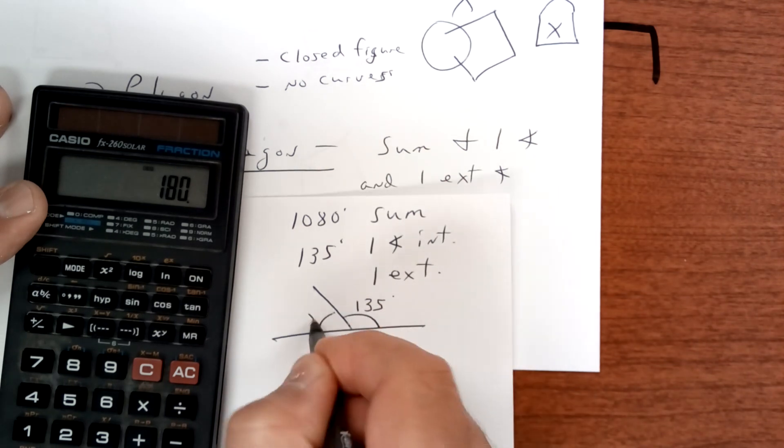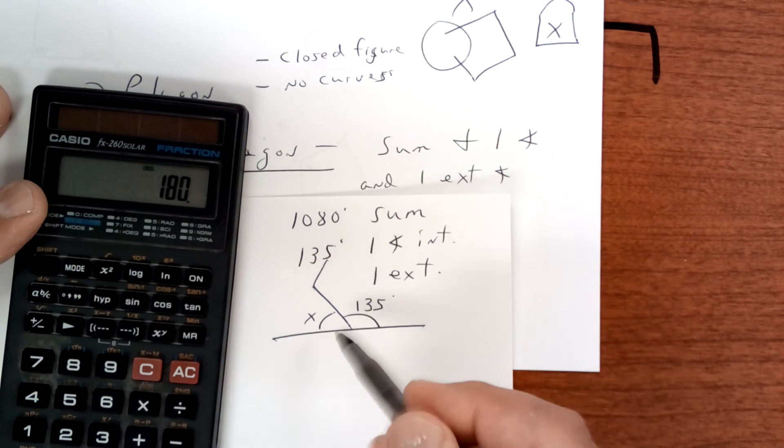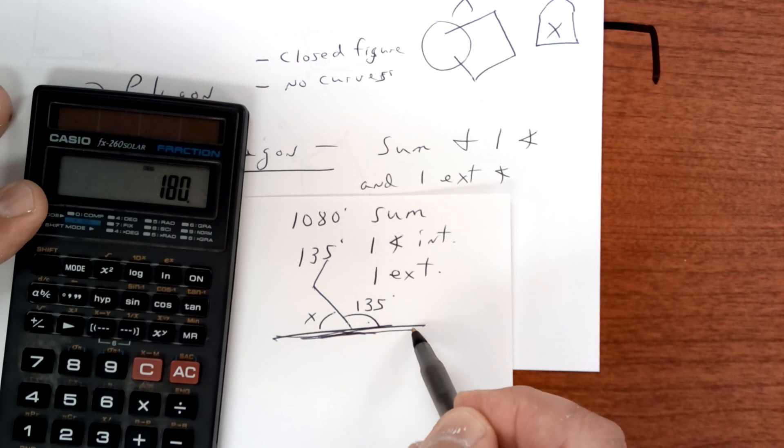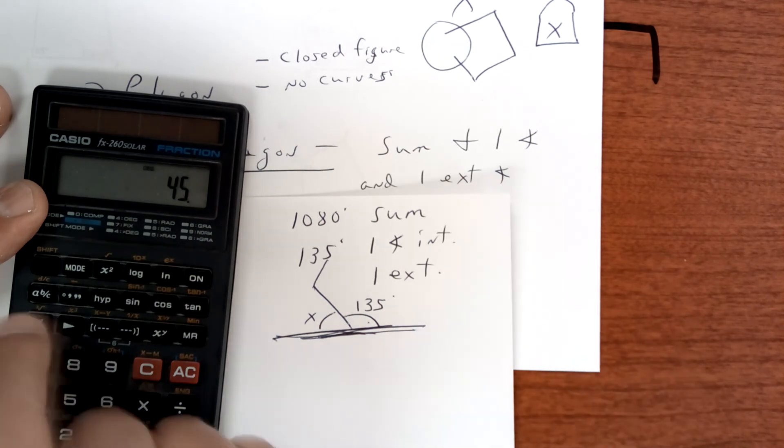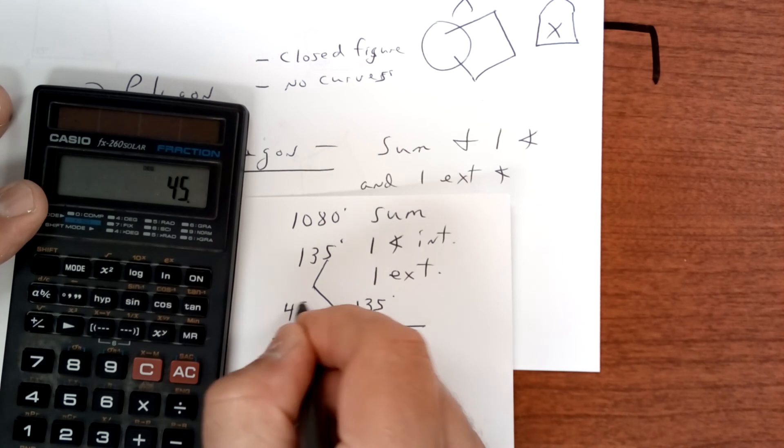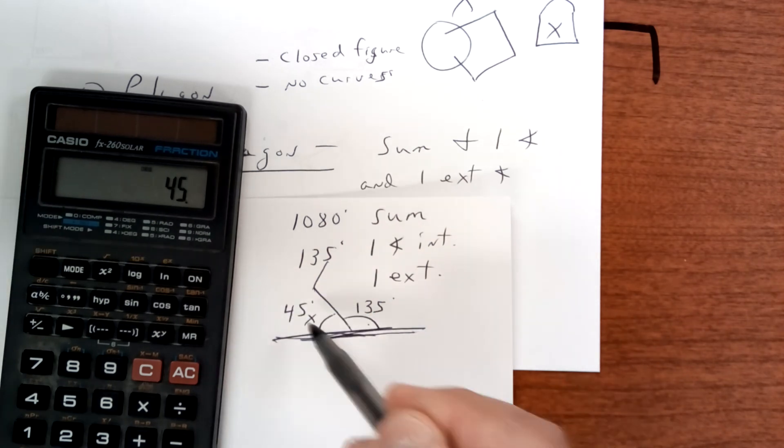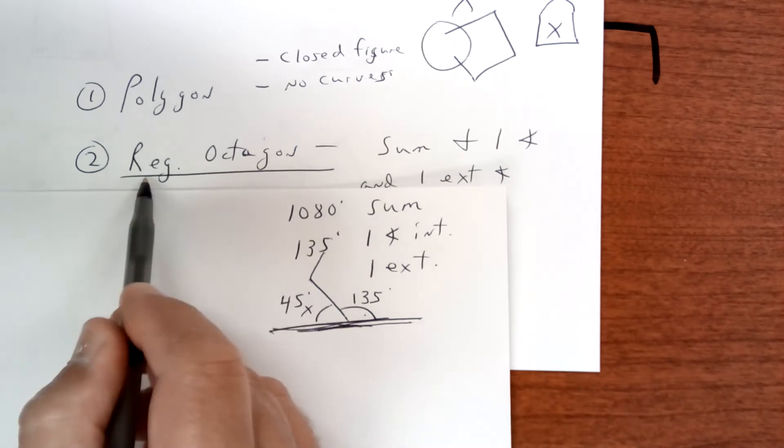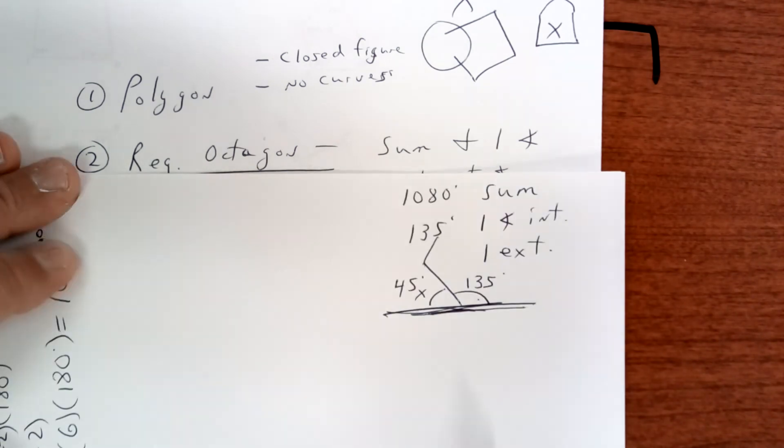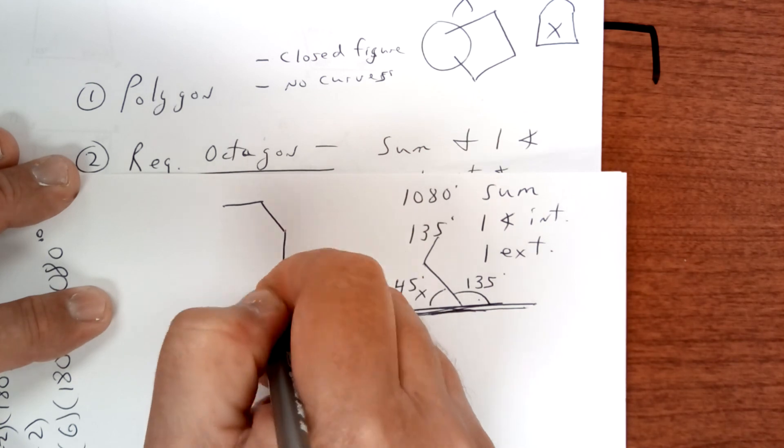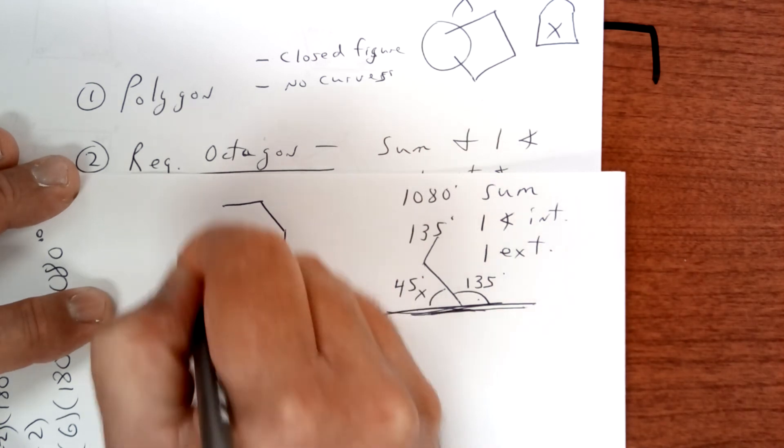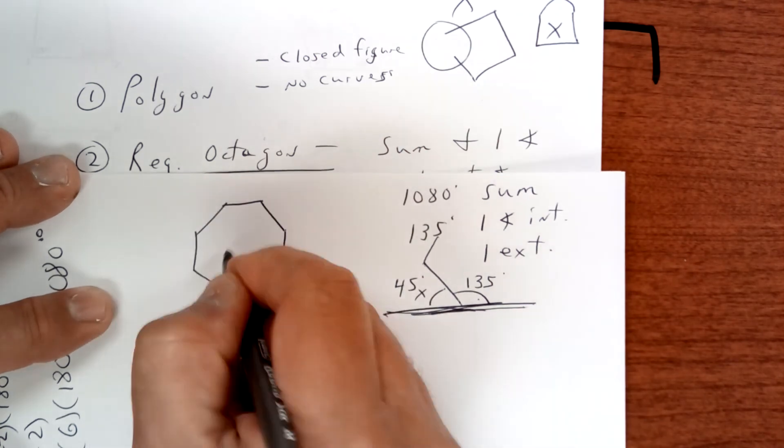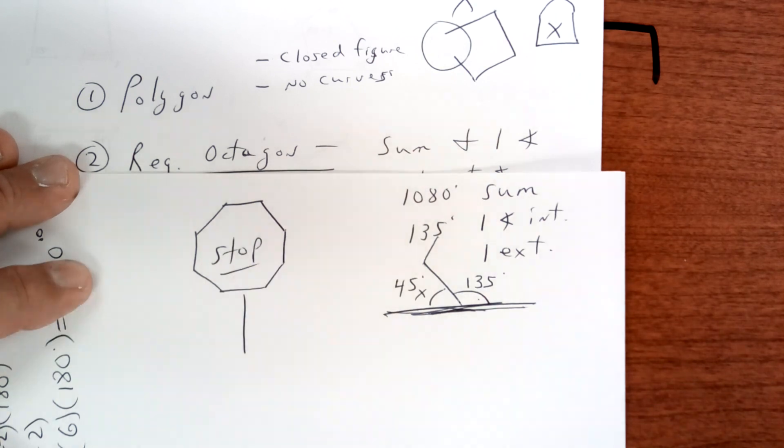So minus 180 - just think about it, this is 135 degrees. And so to get the exterior angle here, what you would do is subtract from 180, which is a line, and I get 45 degrees. So all the exterior angles are 45 degrees on a regular octagon. And by the way, a regular octagon is a stop sign, so next time you come upon a stop sign, that is a regular octagon.